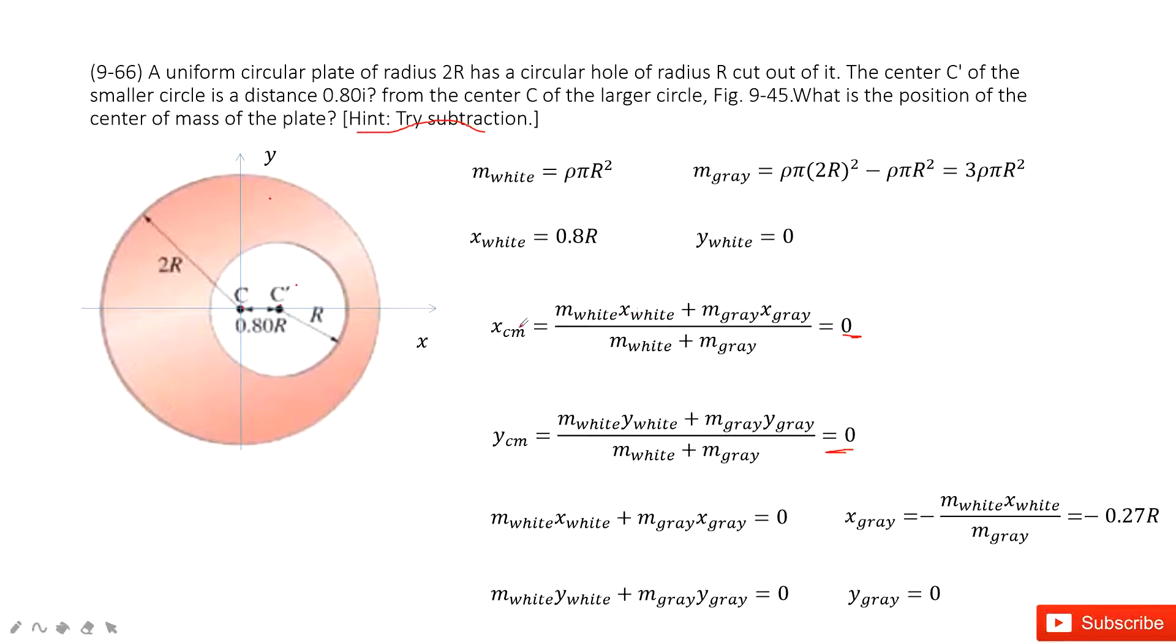For this one, the center of mass for this huge circular plate, it should be the white part, the mass of white times the x white part plus green part times x green divided by total mass. Similarly, we can get the function for y.